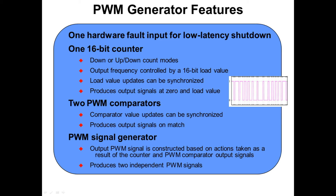The PWM comparator update values can also be synchronized, and an output signal will be produced on a match. The signal generator output is constructed based on actions taken as a result of the counter and the PWM comparator outputs, to produce two independent PWM signals.